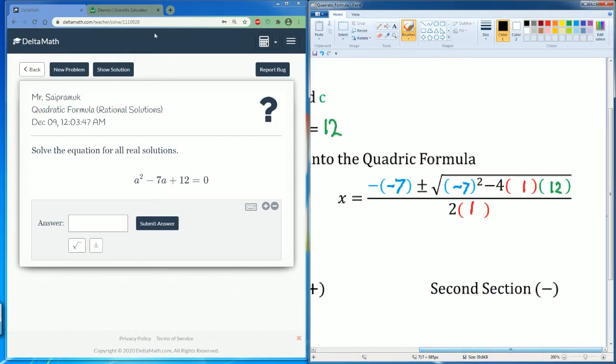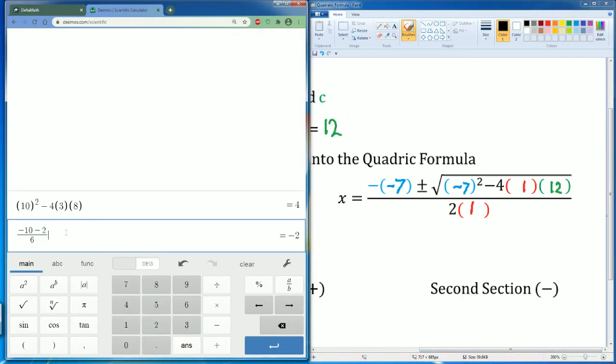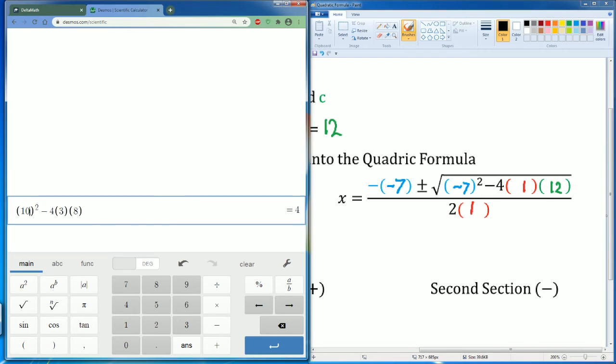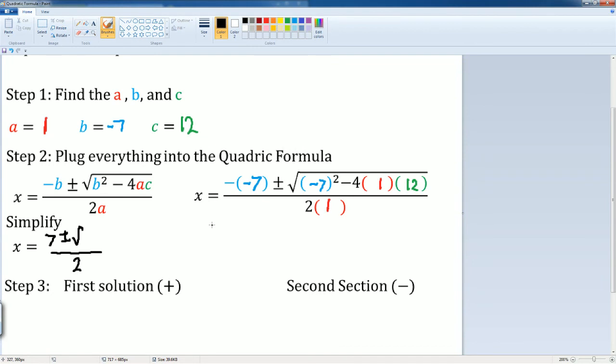So I'm going to use Desmos. And I saw that it was negative 7 times negative 7 squared minus 4 times 1 times 12. I saw that just becomes 1. That's easy. So it's just the radical 1.